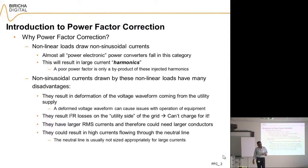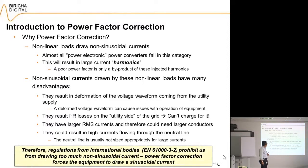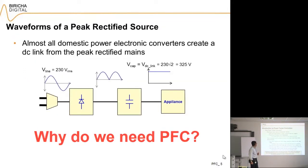Larger RMS currents mean you need larger cables, making things more expensive. If you have triplet harmonics, you could end up sending quite a lot of current down the neutral cable, which is usually not as thick as the phase cables — mainly because in the old days with no power electronic loads, nobody expected much current there. This is why regulations from international bodies, in particular EN61003-2 in Europe, prohibit drawing too much non-sinusoidal current.